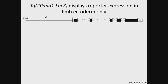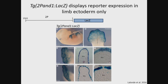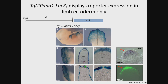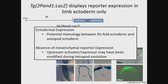To test the functionality of these elements in tetrapods, we created a transgenic reporter mouse line where we took our 2p fish element and inserted the LacZ reporter gene. Despite the disappearance of these genes from tetrapods, the ectodermal enhancer remains functional in both the forelimb and the hindlimb. In contrast, no reporter expression is observed in the mesenchyme. Sections along this axis best demonstrate the absence of mesenchymal reporter expression. You'll note the absence of reporter expression in the apical ectodermal ridge, which is very reminiscent of early actinodon expression in the pectoral fin. The presence of ectodermal expression suggests a potential homology between fin-fold ectoderm and the autopod ectoderm of tetrapod limbs, while the absence of mesenchymal reporter expression suggests potentially upstream activators or repressors may have been modified during tetrapod evolution.